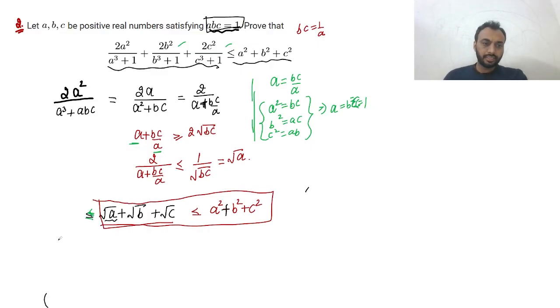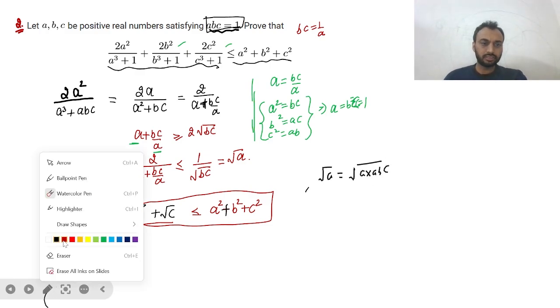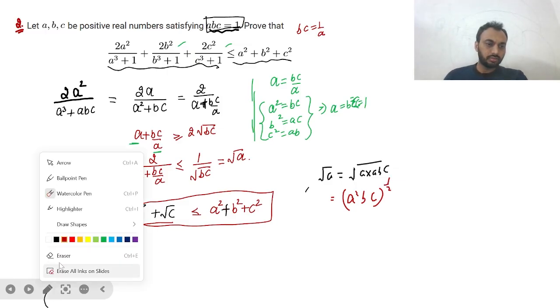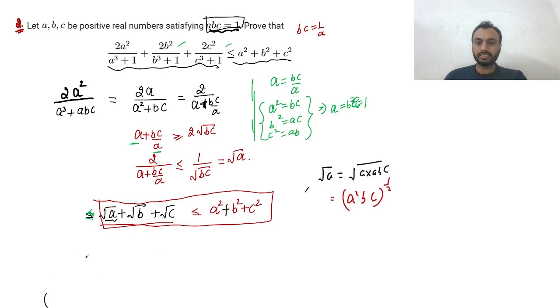We can write √a is √a times abc, because abc is 1. We can multiply with abc. We get a²bc power 1/2. It looks like a GM of a²b and c but we need b² and c² and the power is also 1/2. We need at least 1/3.